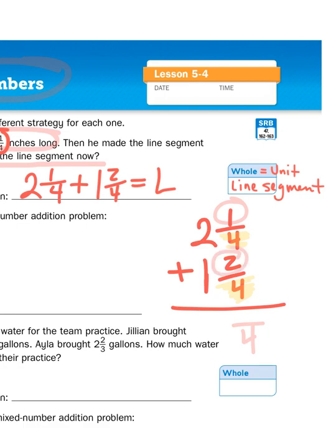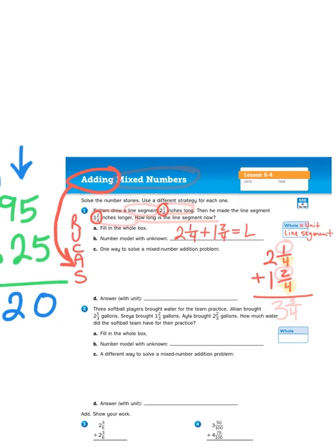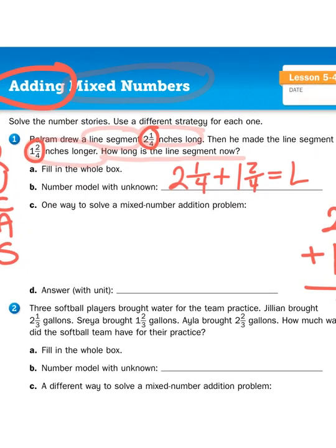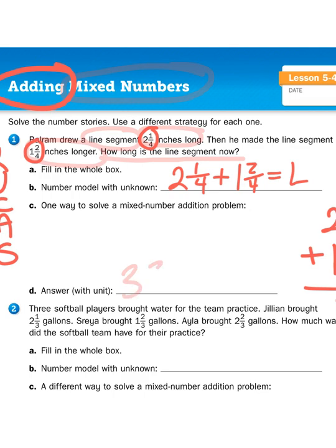So, I can just assume my fractional answer is going to be in fourths. And all I have to do is add the numerators or top numbers together, 1 plus 2. That's going to give me 3/4. And there's no regrouping involved, so all I have to do is add the whole number parts, 2 plus 1. And then, of course, that gives me 3. So, my total for the line segment measurement is 3 3/4 inches.